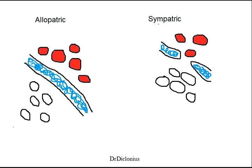If you just look at the name 'sym', that usually means same. So what this actually means is that there is no real geographical barrier between two different species. However, in allopatric speciation there is a physical barrier — this could be like the Grand Canyon, it could be a river, or those kinds of things.